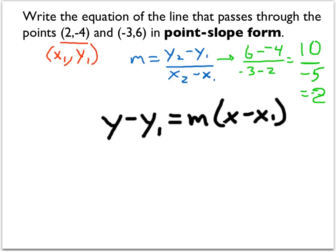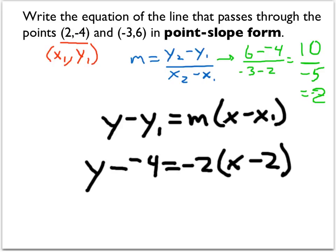So we have our slope of negative 2, and we have a point. So all that's left to do is to substitute the values into the point-slope form. And then lastly, we can simplify the left side.